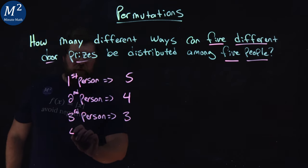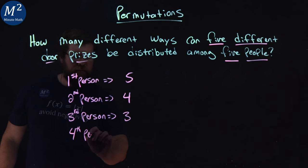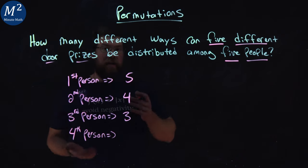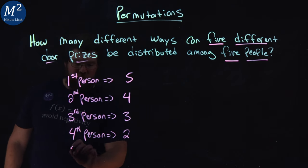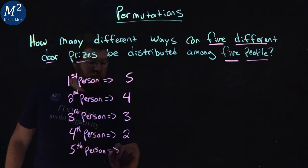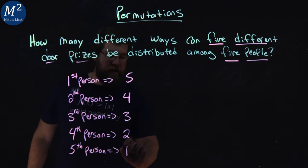The fourth person comes in and there's only two prizes left. And lastly, the fifth person doesn't have a choice and is stuck with whatever prize is left over, the last one.